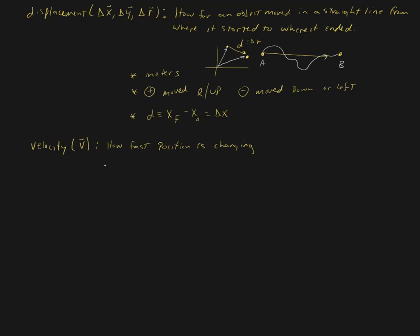Velocity is how fast position is changing. The units of velocity are meters per second—those are the SI units. You could of course use miles per hour or any other mixed unit. It's just got to be a length unit divided by a time unit. In this course we're almost always going to be using exclusively meters per second.